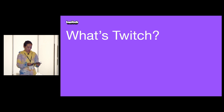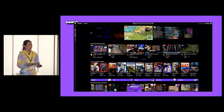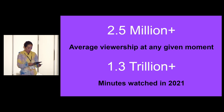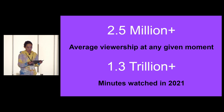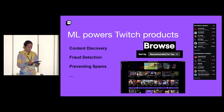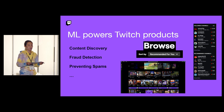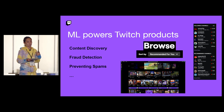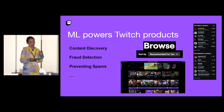What is Twitch? Twitch is a video live streaming company focused on game streaming. We have 2.5 million-plus average viewership at any given moment and 1.3 trillion-plus minutes watched in 2021. Twitch is powered by machine learning almost everywhere — for example, recommendation ML for content discovery, fraud detection, and my team, safety machine learning, which is the guardian of community health. We do machine learning to prevent chat spam and follow-bot detection.